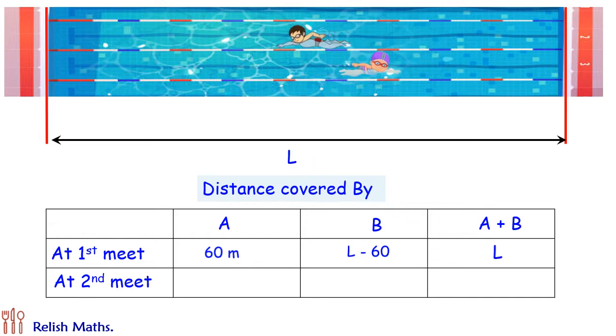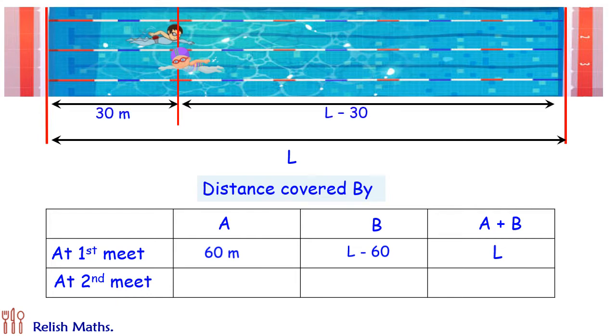Now they continued their journey, they hit the opposite end and turned back. When they meet the second time, the distance from the left side is 30 and thus the distance from the right side will be L minus 30. Now let's see how much is the total distance covered by A before the second meet.